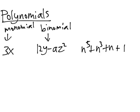We define the degree of a monomial to be the sum of the exponents of all the variables in it. So the degree of 3x is 1.